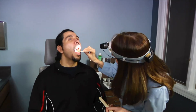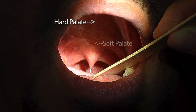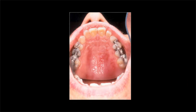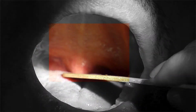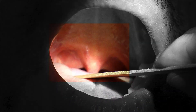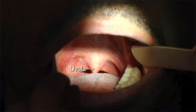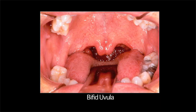Let's check your hard palate, soft palate, and uvula. The hard and soft palates make up the roof of the mouth. There are often ridges in the hard palate. The soft palate is smooth and moves with respiration or when you have the patient say 'ah.' At the end of the soft palate, in the midline, is the uvula. On occasion, this may be bifid.